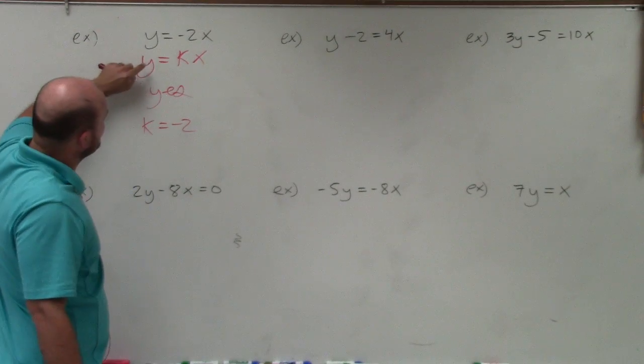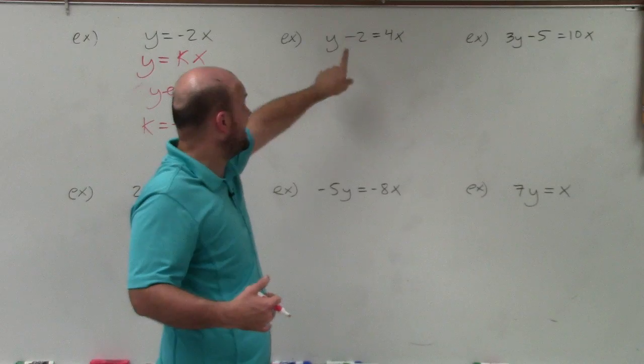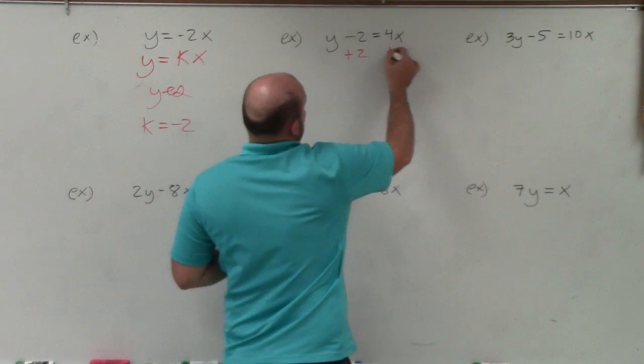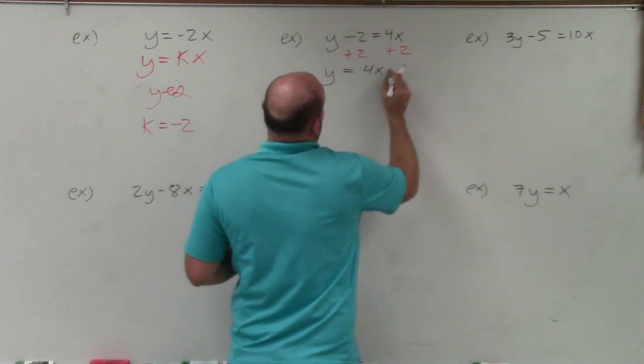So notice that our equation is y is solved. So in this case, to determine if it's in direct variation, I have to solve for y. So to do that, I'm going to add a 2 to both sides. When doing that, I obtain y equals 4x plus 2.